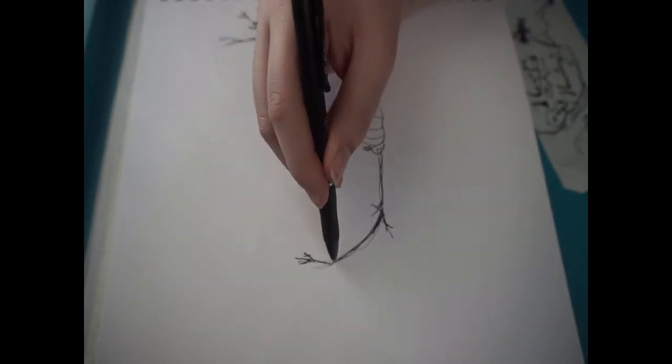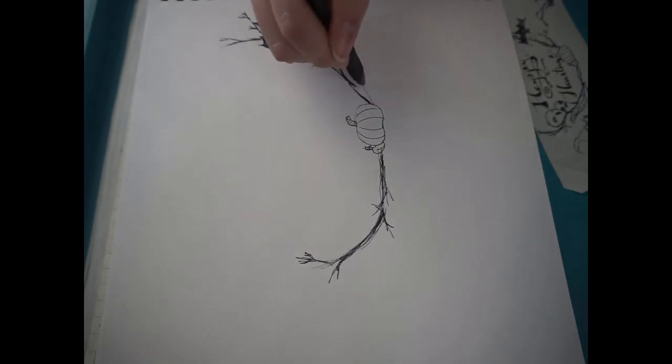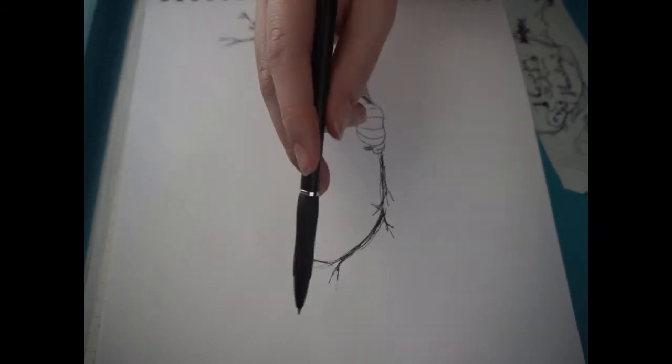And you can have different twigs or branches coming out of the same area, which will also darken it.